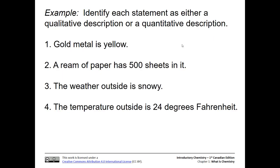So let's go ahead and test ourselves as far as qualitative or quantitative descriptions. So gold medal is yellow. A ream of paper has 500 sheets. The weather outside is snowy, and the temperature outside is 24 degrees Fahrenheit. So think about all of those, and then we'll go to the next slide, and we'll get the answers.